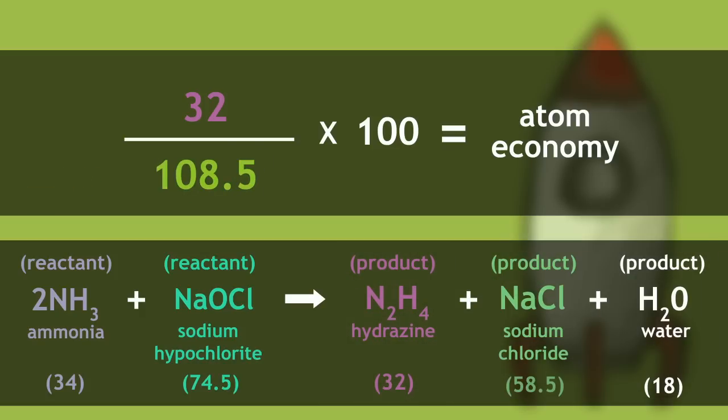Therefore, the mass of our useful product, 32, divided by the mass of all the products, 108.5, multiplied by 100, gives us an atom economy of 29.5.